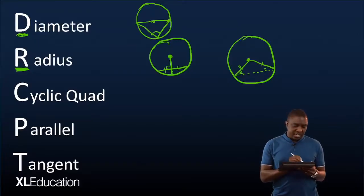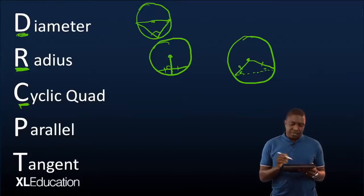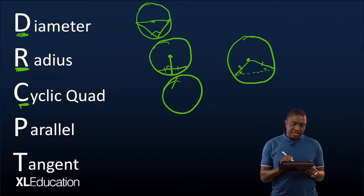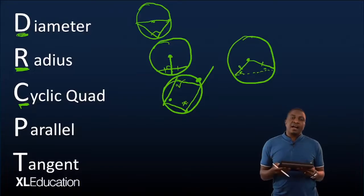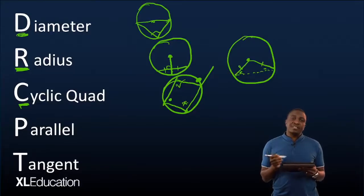When you look at your diagram and there is a cyclic quad, think about all the theorems connected to the cyclic quad. For example, angles in the same segment are equal, and opposite interior angles are supplementary.